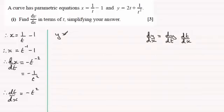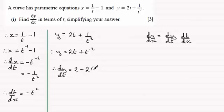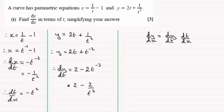Now let's work with y to get dy by dt. We know that y equals 2t plus 1 over t squared, which is the same as 2t plus t to the power minus 2. Differentiating, dy by dt equals 2 minus 2t to the power minus 3, which I can rewrite as 2 minus 2 over t cubed.